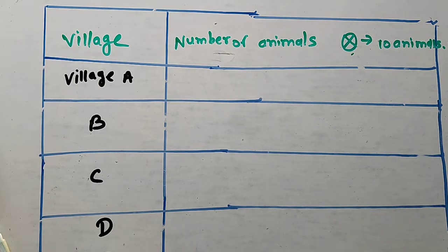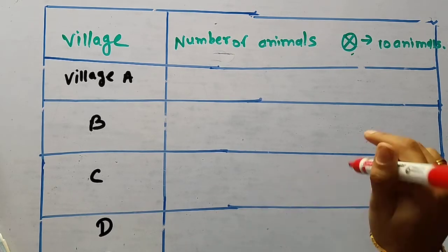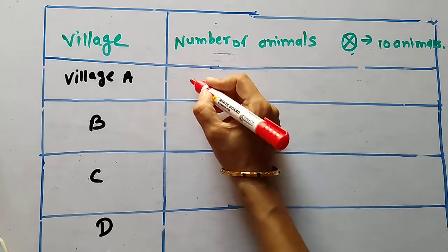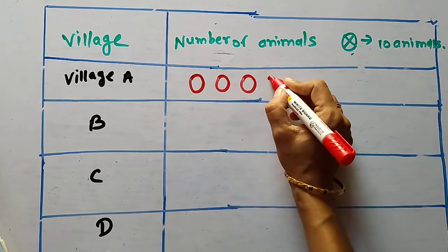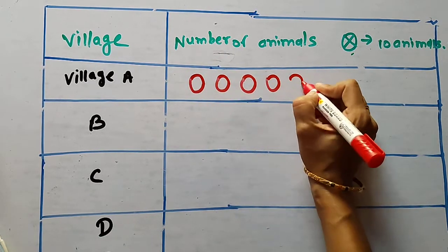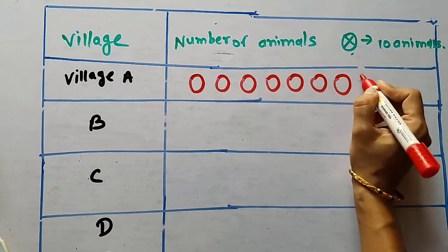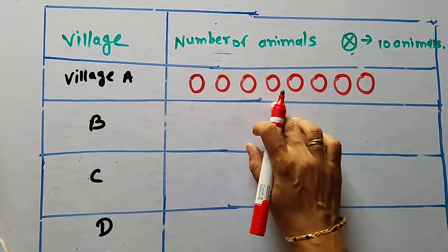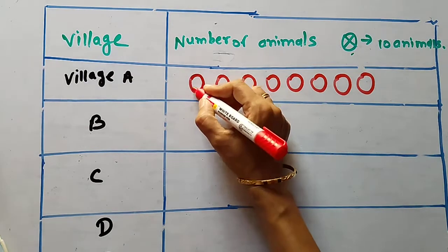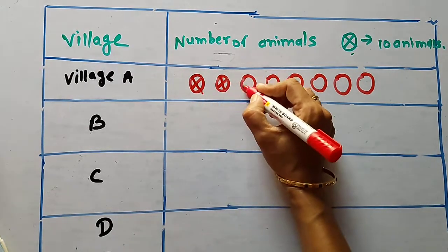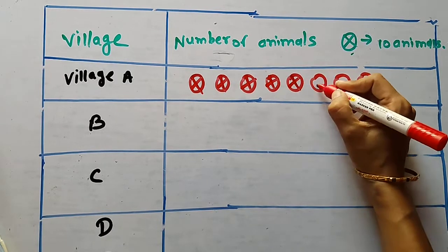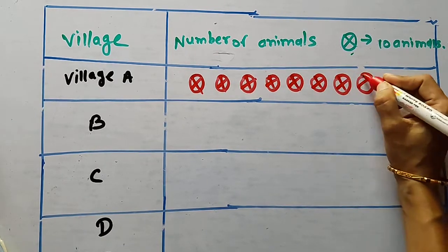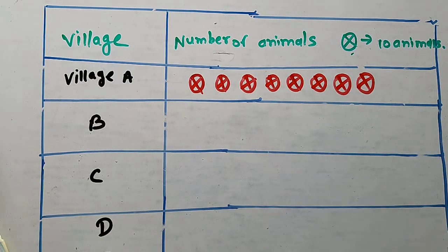In village A, how many animals? 80. For 80, one symbol means ten, so you have to draw 8 symbols: one, two, three, four, five, six, seven, eight. These 8 symbols represent 80 animals.